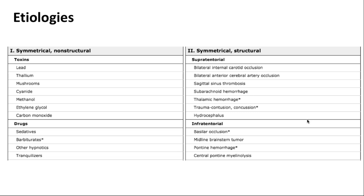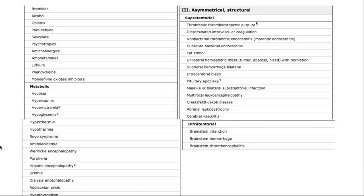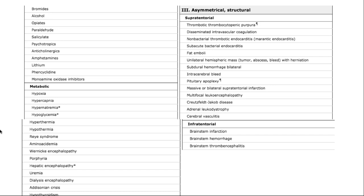Non-structural causes are almost always systemic in nature and can be subclassified into toxins — commonly carbon monoxide, ethylene glycol, drugs such as benzodiazepines and tranquilizers — and metabolic causes, which are most common in clinical practice: metabolic encephalopathies such as hypo/hypernatremia, hepatic encephalopathy, Wernicke's encephalopathy secondary to hyperemesis gravidarum or post-bariatric surgery, and uremia. It can also happen with infections like meningitis, encephalitis, meningovascular neurosyphilis, or cerebral malaria, as well as psychiatric illnesses and post-ictal states.